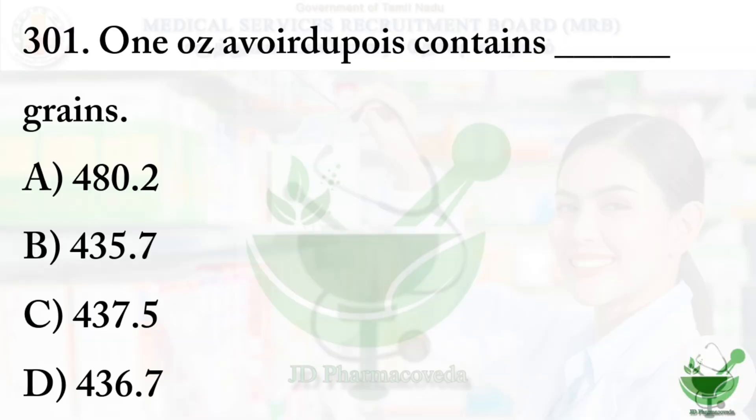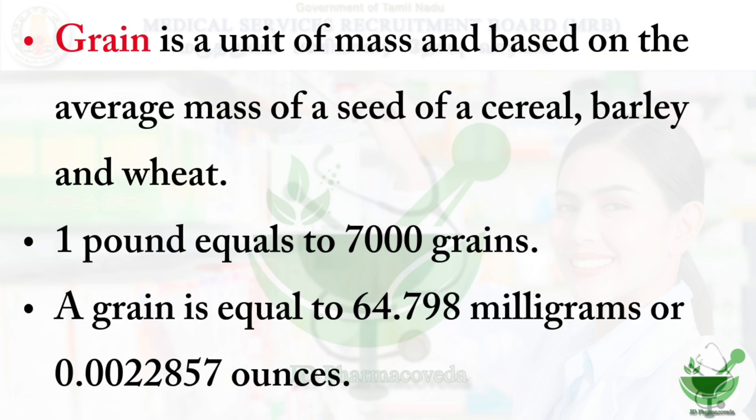Question number 301: One ounce contains how many grains? Option A: 480.2, Option B: 435.7, Option C: 437.5, Option D: 436.7. The correct answer is Option C, 437.5.